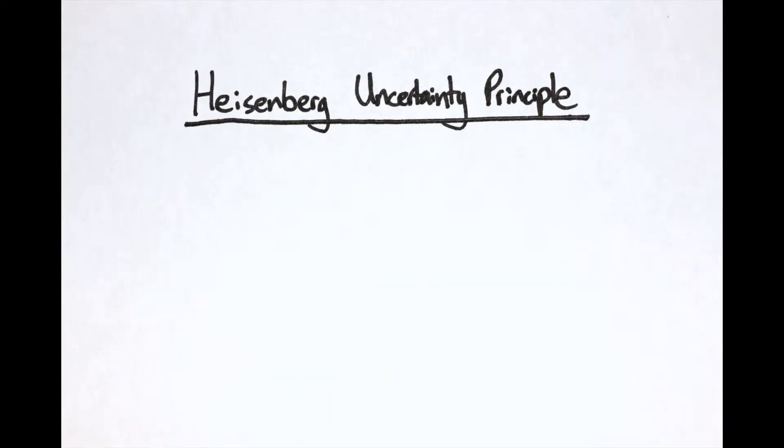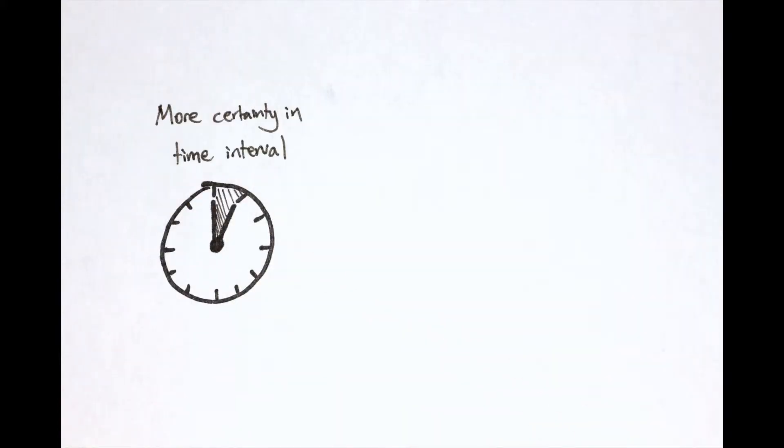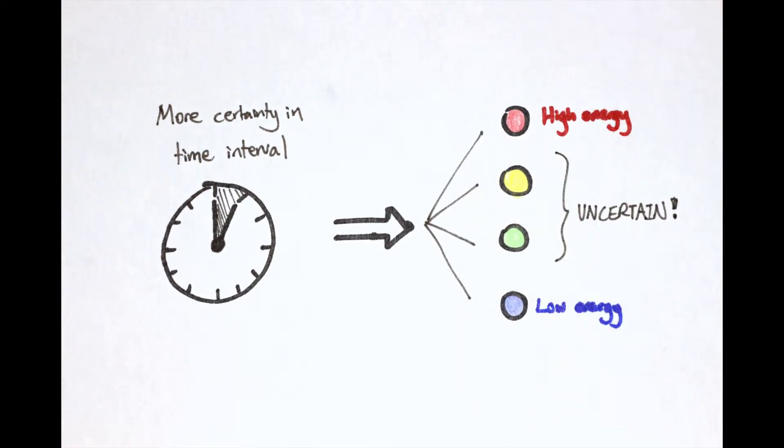A version of the Heisenberg uncertainty principle, one of the foundational stones of quantum mechanics, states that we cannot perfectly define the time and energy of a particle at the same time. The more certain we are about the time interval of a particle's behavior, the less certain we become of the energy state of the particle during that time interval.